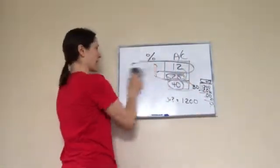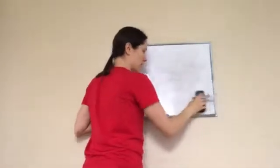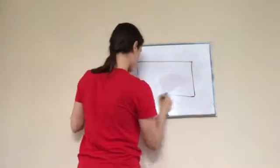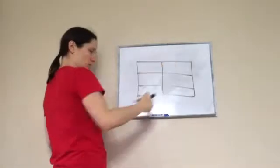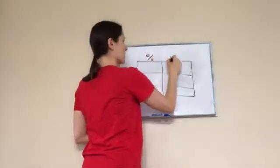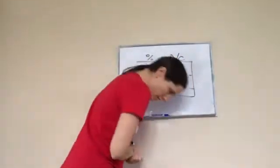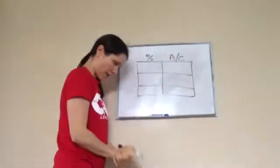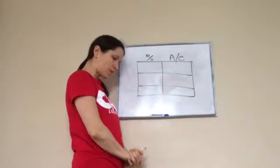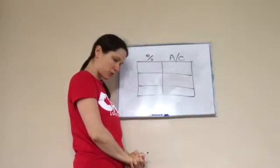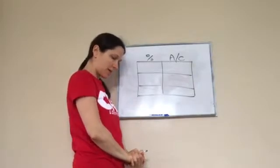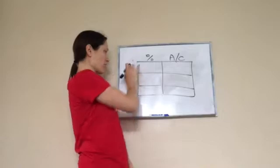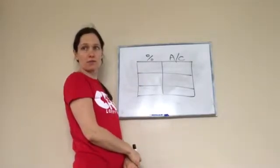Let's do one more. Let you help me figure out where to put everything into the box again. So draw another box, three rows, two columns. Put percent on one and actual count on the other side.